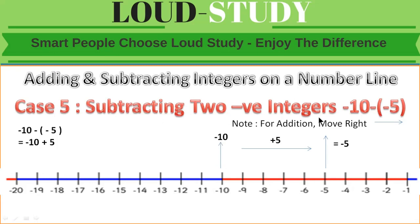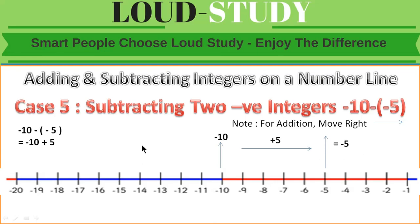Case 5: subtracting two negative integers. Suppose minus 10 minus minus 5. Applying the rule, minus minus gives plus, so this becomes minus 10 plus 5. Starting at minus 10, for addition we move right 5 steps: 1, 2, 3, 4, 5. The result is minus 5.